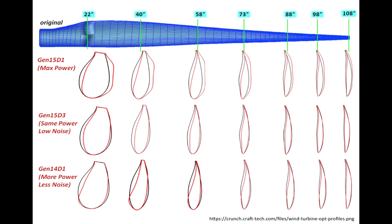To optimize performance, a modern wind turbine blade often uses airfoils with different shapes and sizes at different positions along the span of the blade — from the center to the tip. At different locations along the span, you could use different airfoils with different shapes and sizes. In this particular example, the shape of the airfoils at different locations is being optimized to maximize the power output while minimizing the noise created by the turbine.